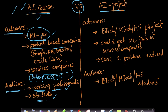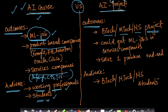The Applied AI project has a different expected outcome: to complete your final year BTECH, MTECH, or MS project in AI. The primary outcome here is not to get a machine learning job, but to do your final year project — whether BTECH, MTECH, or MS — using AI. That's why we called it the AI project.